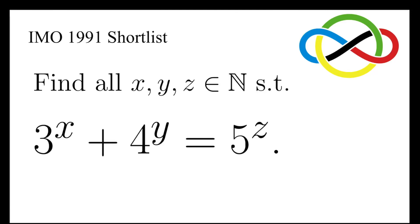In this video, we are going to find all natural numbers x, y, and z such that 3 to the x plus 4 to the y equals 5 to the z.